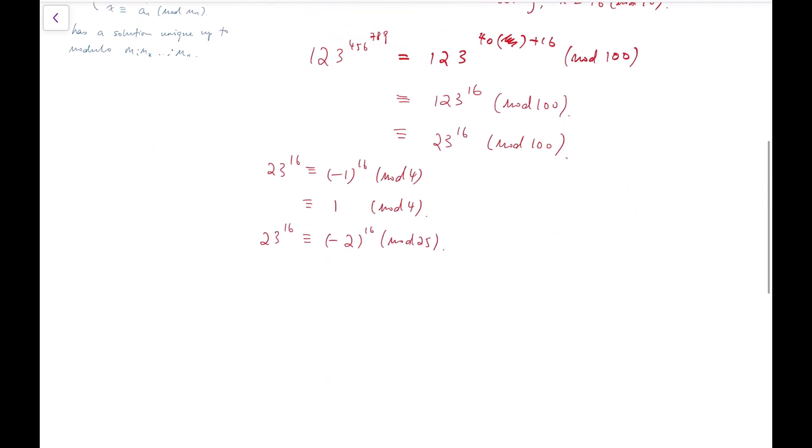And at the same time, this power is congruent to -2 to the power 16 mod 25. Notice that this is just 2 to the power 16 mod 25, and I can rewrite that as 2^10 times 2^6 mod 25. The reason that I do this is that 2^10 equals 1024, which is very close to a multiple of 25, as you can see from the last two digits, which means that it's congruent to -1 times 64 mod 25. Now you can quickly compute that and get 11 mod 25.